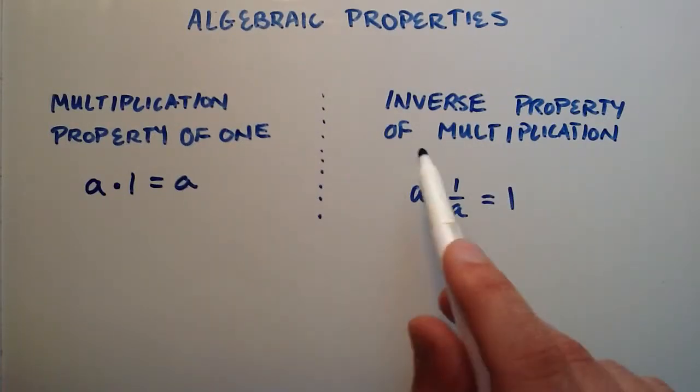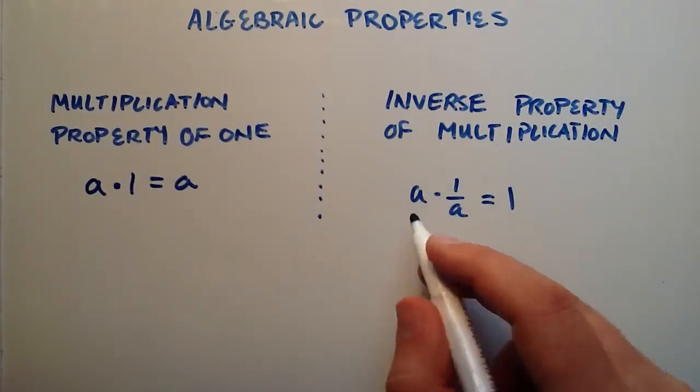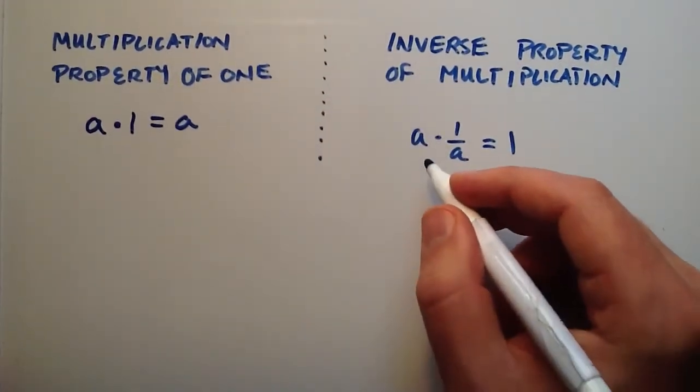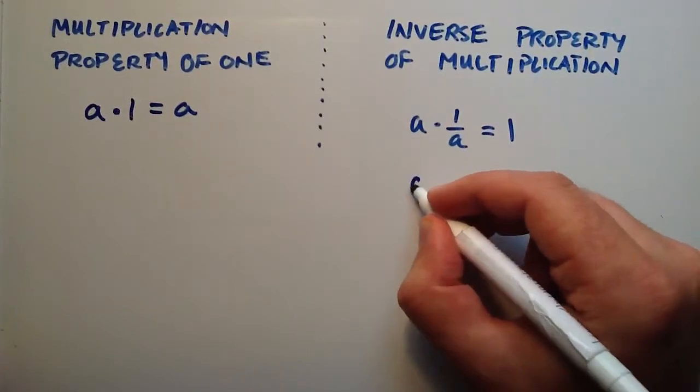So how can we use these simple properties to our advantage? Well, first let's realize that a, right here, can be rewritten as a divided by 1.